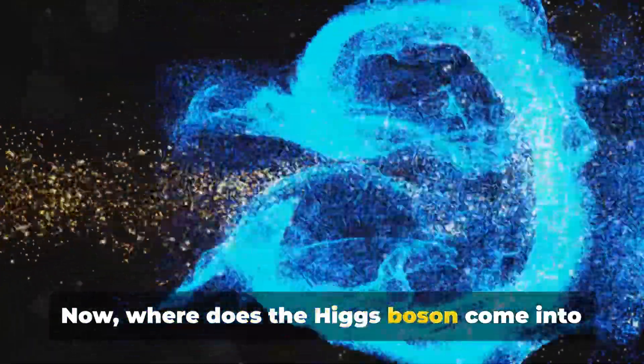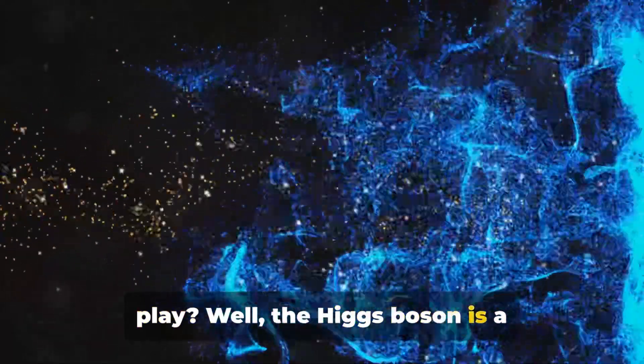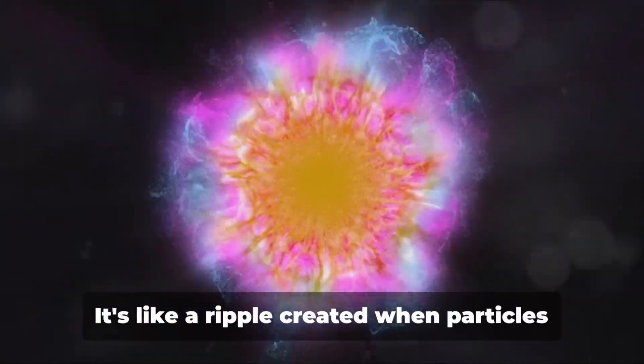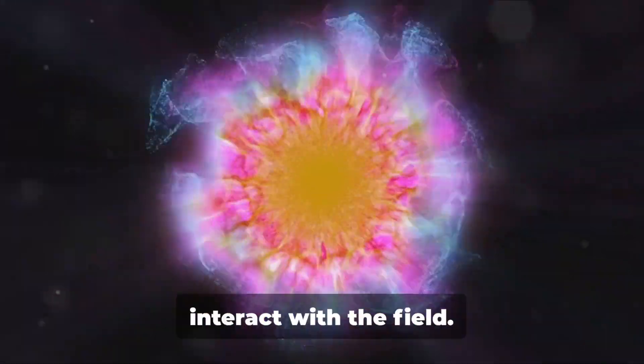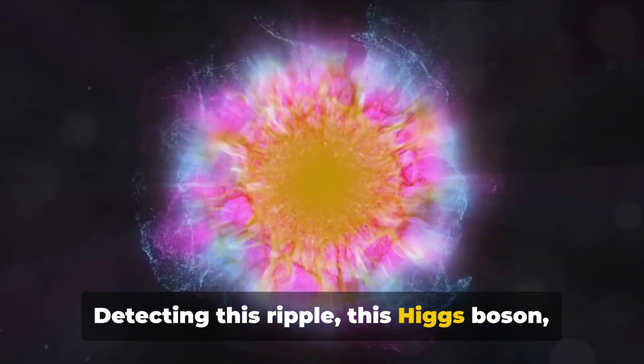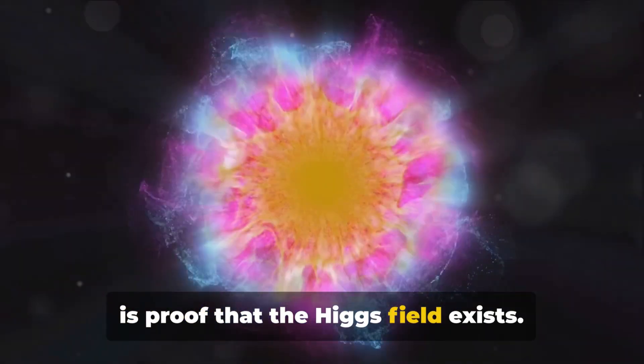Now where does the Higgs boson come into play? Well, the Higgs boson is a manifestation of the Higgs field. It's like a ripple created when particles interact with the field. Detecting this ripple, this Higgs boson, is proof that the Higgs field exists.